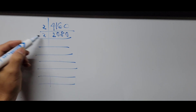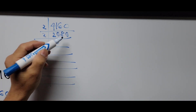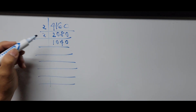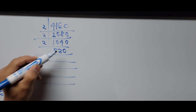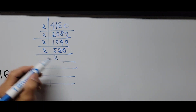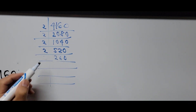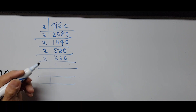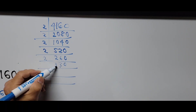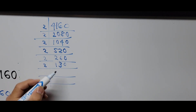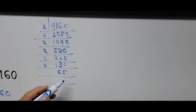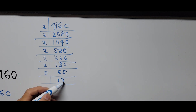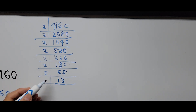Continuing: 520 ÷ 2 = 260, ÷2 = 130, ÷2 = 65. Now since 65 ends in 5, we can no longer divide by 2, so we divide by 5: 65 ÷ 5 = 13. So the prime factorization ends with factors of 5 and 13.